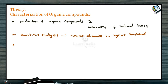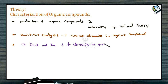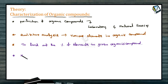Next, you find out the composition — that means how much percentage of these elements are present in the organic compound, i.e., to find out the percentage of elements in the given organic compound. For this also you have to use many methods. And finally, we will calculate the molecular mass of the compound.